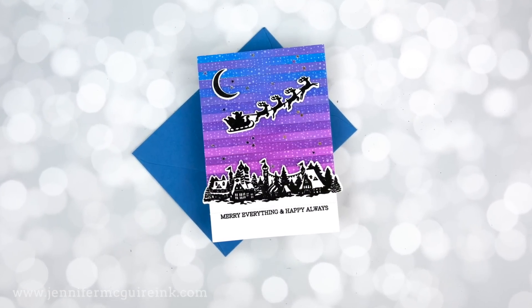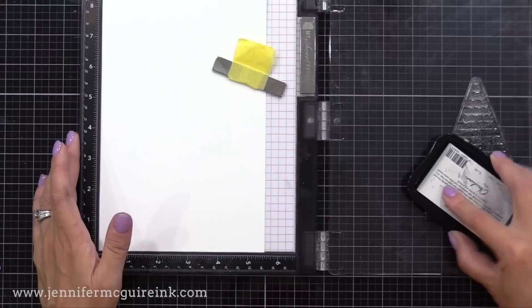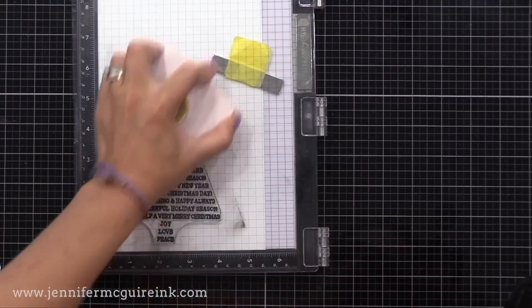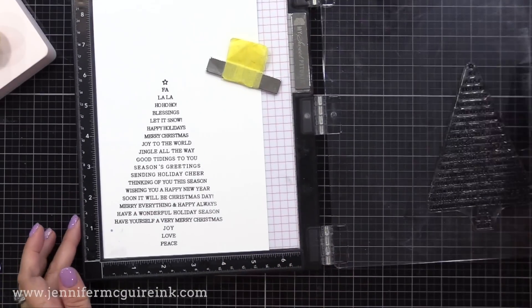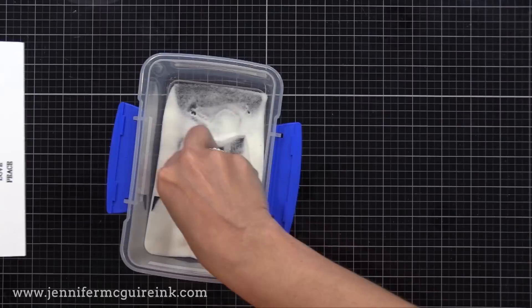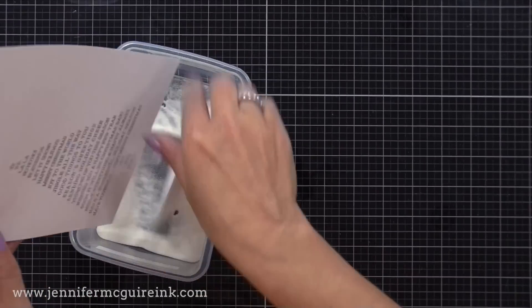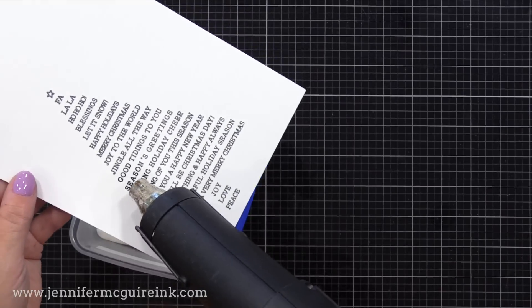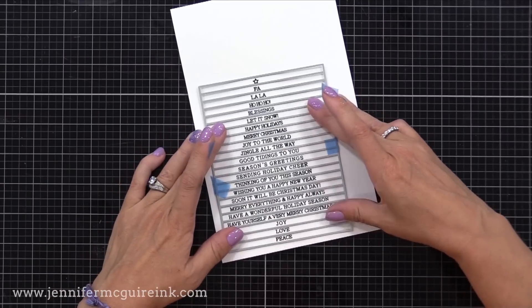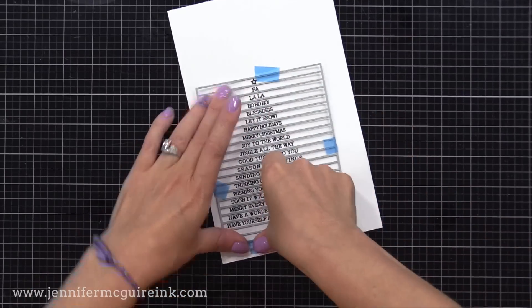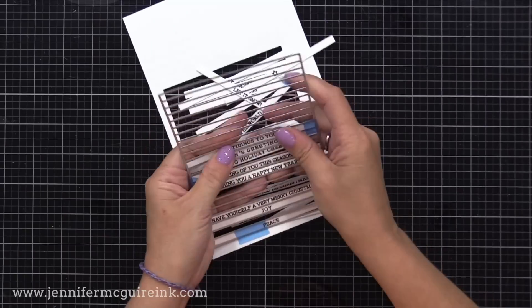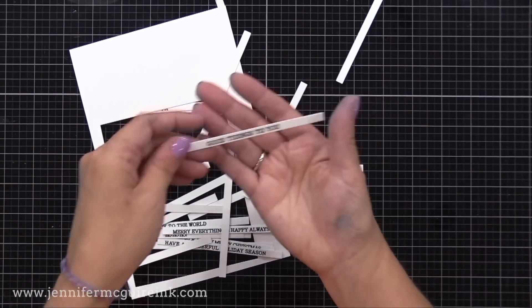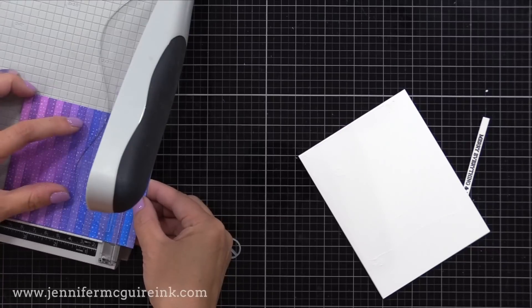The last piece we need to create before putting our card together is a sentiment. So I'm using the Tree Sentiment stamp that I showed you earlier, and I'm stamping it with black pigment ink on white cardstock, and adding clear embossing powder. Now for the fun part, we can use that same background die to quickly cut out all of these sentiments. Isn't that cool how it lines up? So now I have a lot of sentiments ready to use.